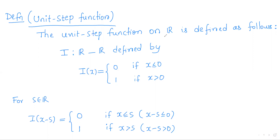The unit step function on the real line R is defined as follows. It is basically a real-valued function of a real variable defined as i(x) = 0 for all x less than or equal to zero, and i(x) = 1 if x is positive.